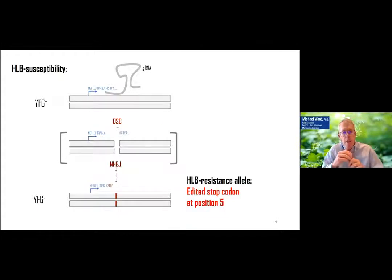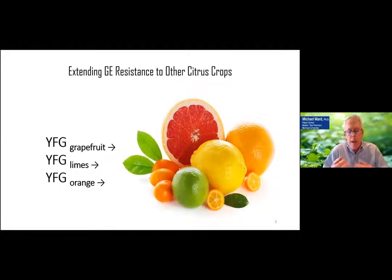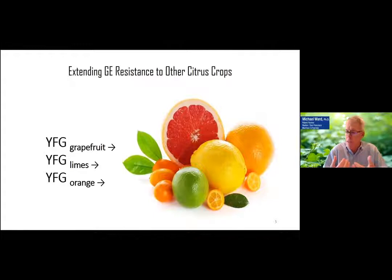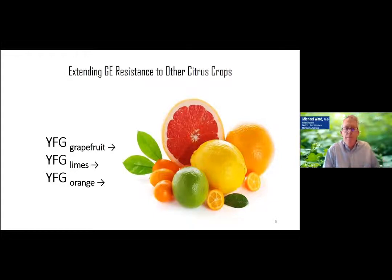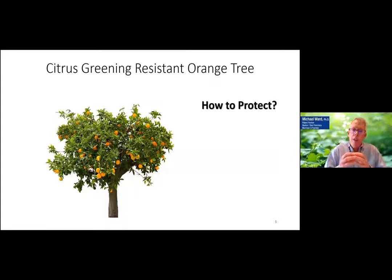This was an edited stop codon at position five. You can then take that knowledge and information, introduce that same mutation into grapefruit, limes, and orange to create resistance in other citrus crops. In our example, what we're going to talk about is a resistant orange tree and how to go about protecting it.